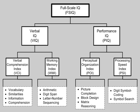The Wechsler Adult Intelligence Scale is an IQ test designed to measure intelligence and cognitive ability in adults and older adolescents. The original WAIS was published in February 1955 by David Wechsler, as a revision of the Wechsler-Bellevue Intelligence Scale released in 1939. It is currently in its fourth edition, WAIS IV, released in 2008 by Pearson, and is the most widely used IQ test for both adults and older adolescents in the world. Data collection for the next version, WAIS V, began in 2016 and is projected to be complete in 2019.